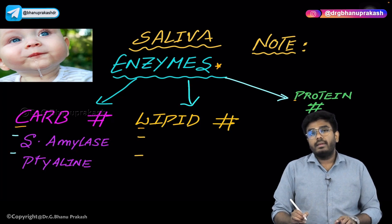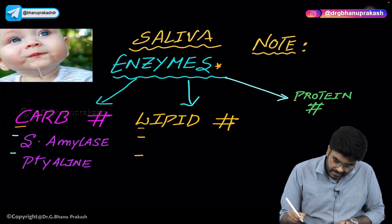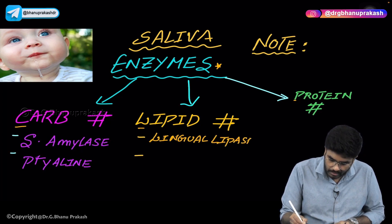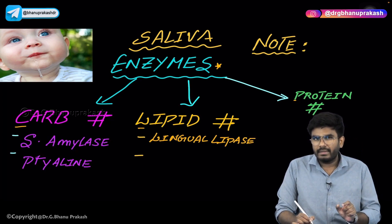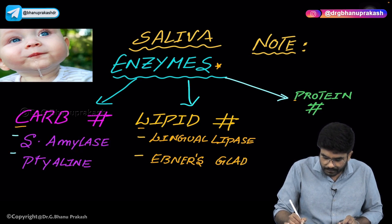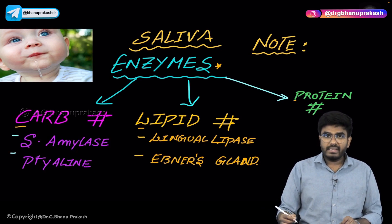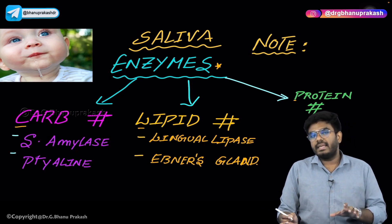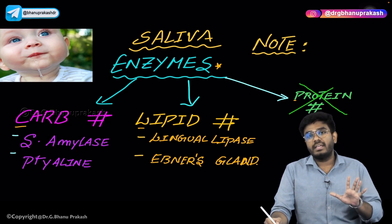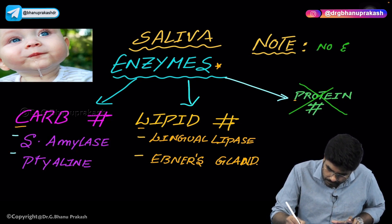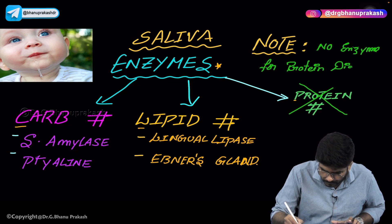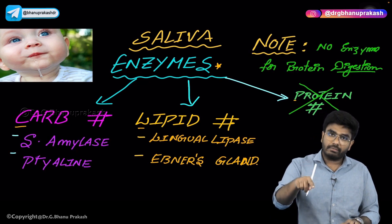Is there any enzyme in saliva that can digest lipids? Yes — the enzyme is called lingual lipase. Lingual lipase comes from the minor salivary gland, Ebner's gland. So Ebner's gland is the one that produces lingual lipase, which helps in digestion of lipids. As for protein digestion, there is no enzyme in saliva for digesting proteins — saliva does not have any enzyme for protein digestion.